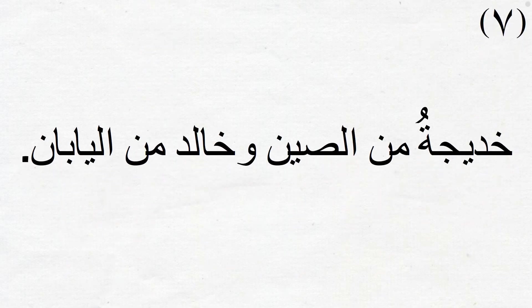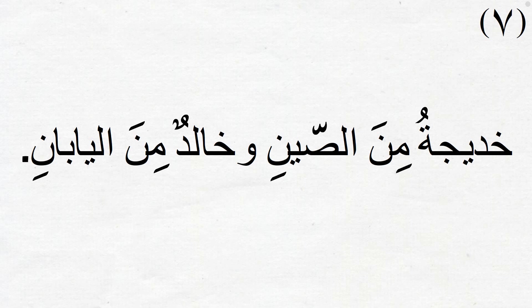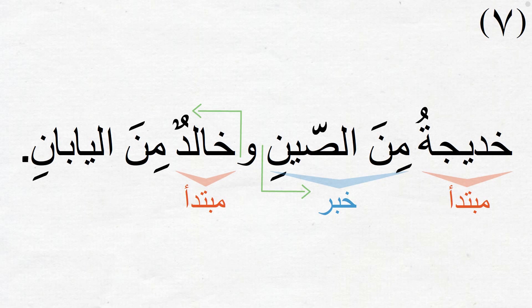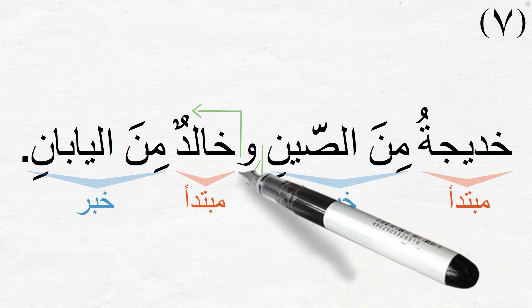The final sentence: خديجة من الصين وخالد من الياباني — 'Khadija is from China and Khalid is from Japan.' Is this fi'aliyya or ismiya? It is ismiya. We actually have two of them. خديجة is the mubtada of the first sentence and its khabar is the shibhu jumla من الصين. خالد is the mubtada of the second sentence and من الياباني is the shibhu jumla type khabar. The two sentences are separated by harf wa.